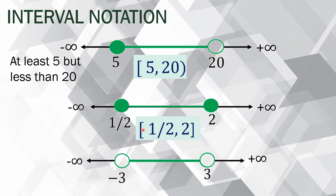What about 1/2 to 2? It means you start at 1/2 all the way to 2, and those are the only numbers being referred to. So if the question is: is 1 part of the interval? Yes, because 1 is between 1/2 and 2. What about 0? No, because 0 is less than 1/2 — it's not included.